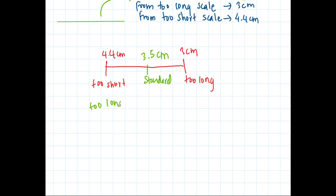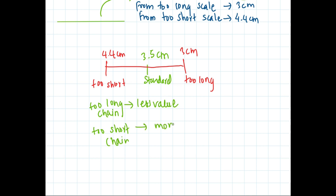So what can we conclude from this observation? The too long chain gives us a less value while measuring, and the too short chain gives us a more value. So the relation is opposite — too long gives less value, too short gives more value.